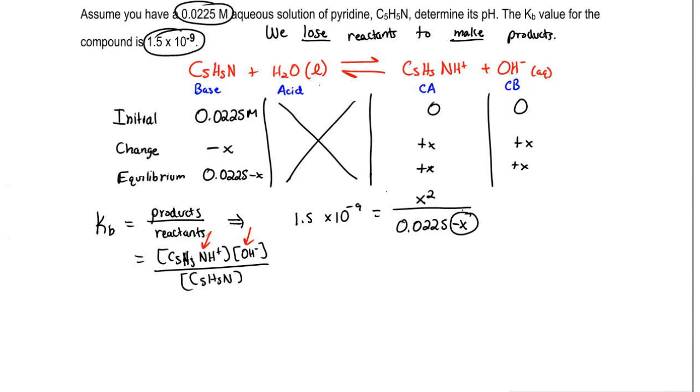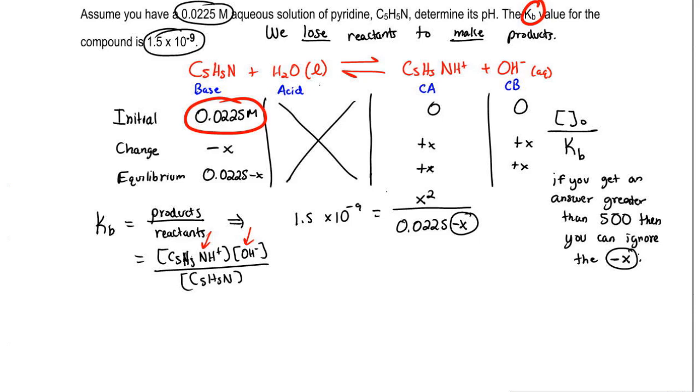If we can ignore that minus X, we don't have to do the quadratic. To figure out if we can ignore it or not, we're just simply going to do this. We're going to take our initial concentration. Our initial concentration is this number. And divide it by our K value, whichever K we're using. In this case, we happen to be using KB. So it'd be over KB. But if we used another question and the value had to be KA, then it will be the initial divided by KA. We're going to say if you get an answer greater than 500, then you can ignore the minus X.